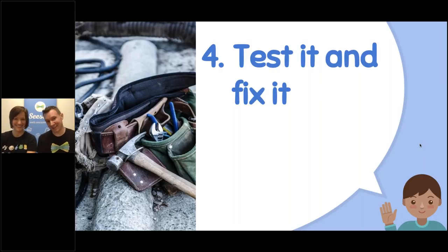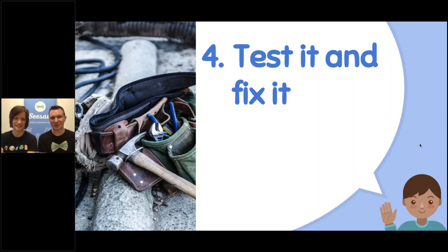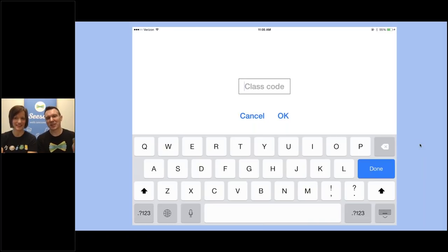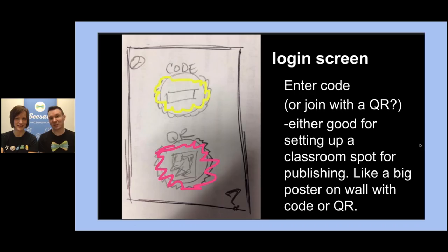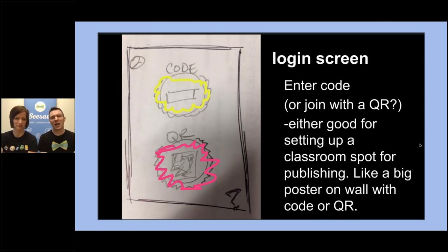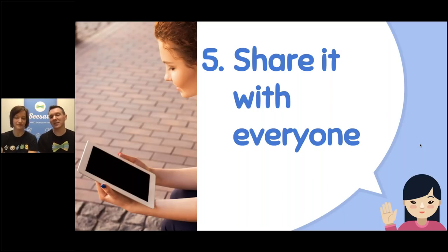It may seem like we're done — we've told the computer what to do, we can just go home and enjoy our new app. Unfortunately, usually things don't work quite as well as we originally anticipated. In Seesaw, early on the way you connected to your class was by typing in a special code, and we found out through testing that this was just too hard. A lot of people got the code wrong — it was easy to lose or forget. We ended up using a QR code instead, which is probably how many of you connect to Seesaw today. And that came through testing. We didn't know that originally.